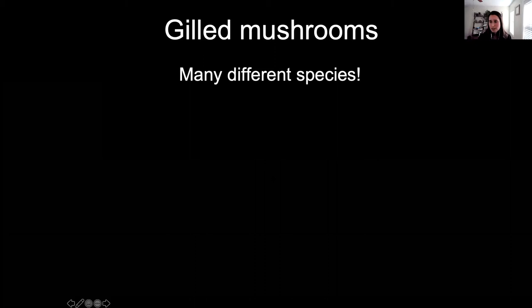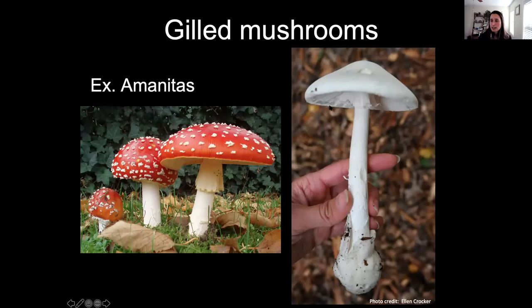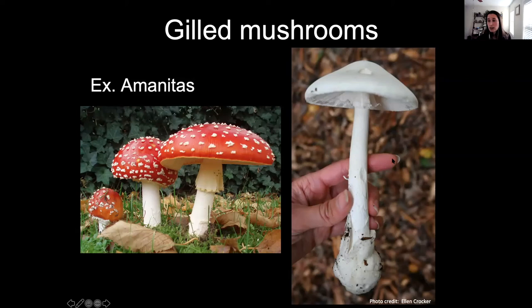Gilled mushrooms include Amanitas — this is a photo of the destroying angel, one of the super-poisonous ones. Amanitas also include the fly agaric-type with a yellowish color here in our area, which has a different set of toxins that will make you feel very weird and sick. This type causes liver and kidney failure; the mortality rate is extremely high with no good treatment other than a liver or kidney transplant — something you absolutely do not want to mess with.